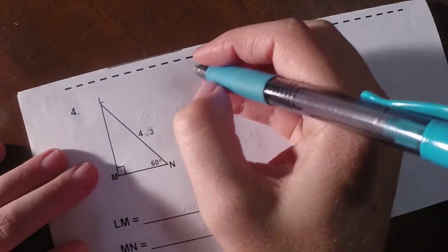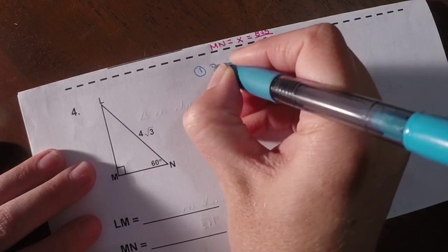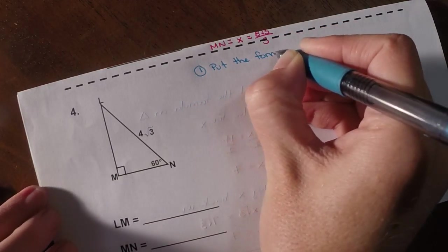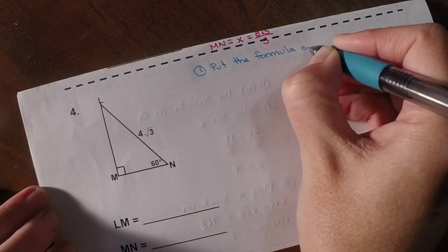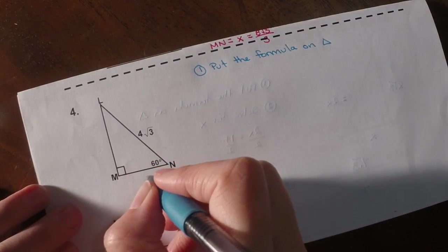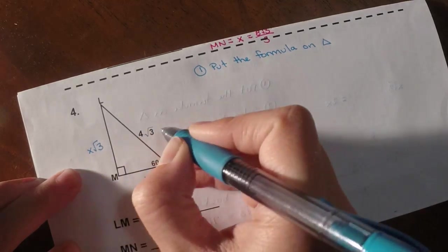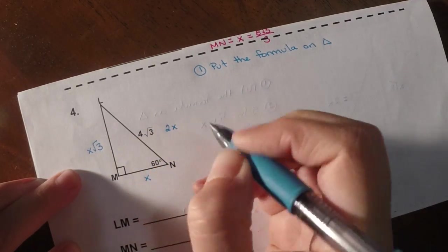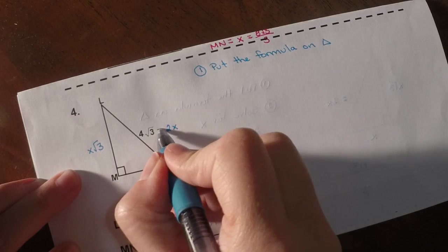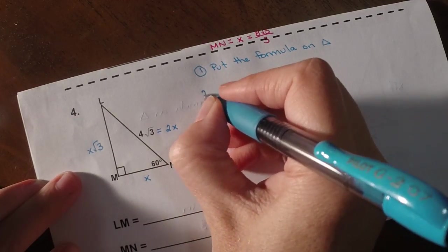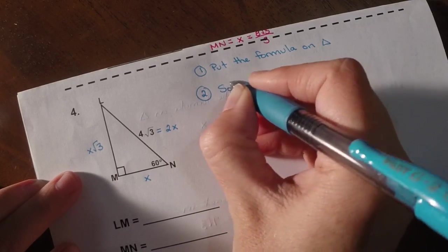So again, steps, we're going to put the formula on the triangle. So the short leg is x, the long leg is x root 3, the hypotenuse is 2x. Again, you can already see where we're going to have to solve for x.